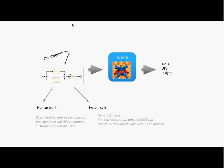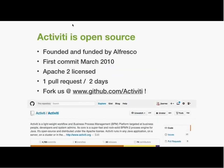From a high level, you give Activiti this diagram — this is a very simple example with only three steps, but real business processes can have many more; I've seen processes with 250 steps going into production. You give that XML file to the Activiti engine, and what you get back is a bunch of APIs allowing you to manage your processes, see task inboxes for different users, continue processes, get their states, plus UIs, insight, metrics, and reports on top of that.